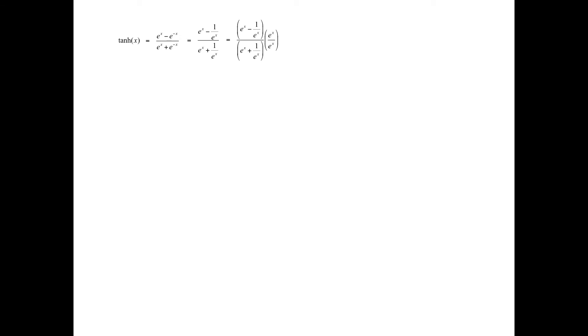If we multiply the top and bottom by e to the x, then we can rewrite this as e to the 2x minus 1 divided by e to the 2x plus 1.